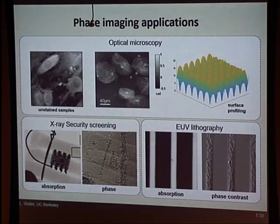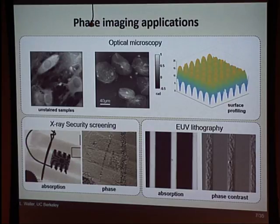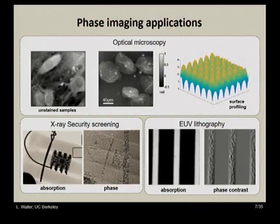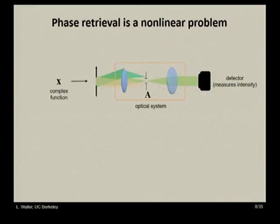There are many applications. We do biological work in bio-microscopes — cheek cells and epithelial cells. You can do surface profiling because for transparent objects like microlens arrays, the phase delay is proportional to shape. We work a lot with the ALS — the Advanced Light Source at Berkeley — doing EUV lithography work; measuring phase lets them see defects on masks and wafers much more easily since they're phase defects. We also have a project doing phase in x-ray security screening. Phase retrieval must be computational imaging since we cannot measure phase directly.